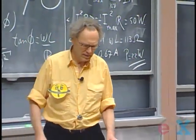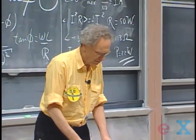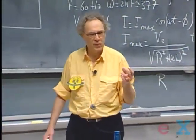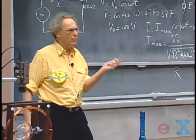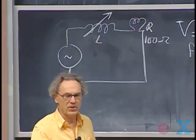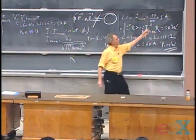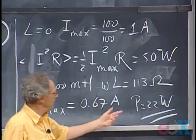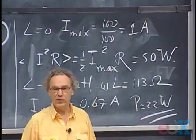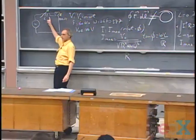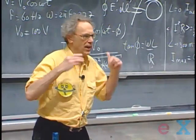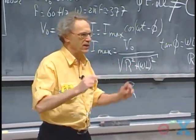A very deep conceptual question: why would you build a light dimmer with a self-inductor rather than a variable resistor? If you can answer that question, it shows you have deep insight in 802. I promise I will not ask this question Wednesday, but I may ask it on the final.